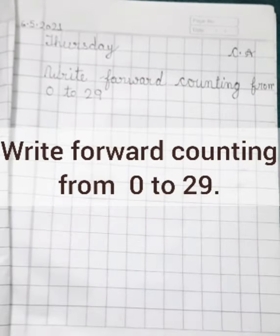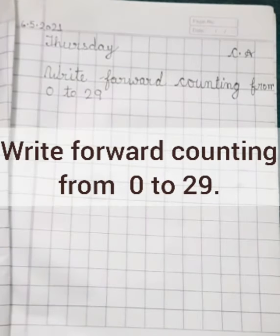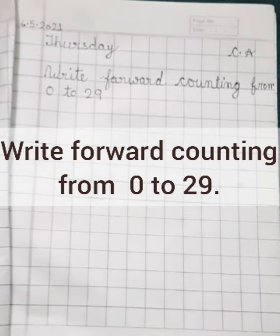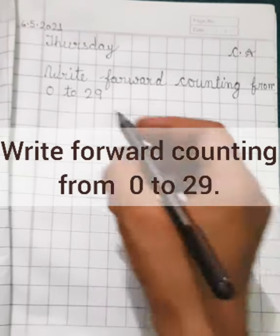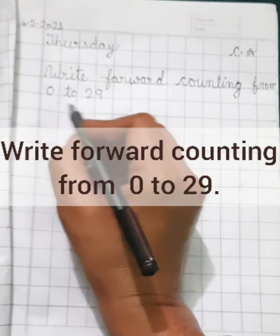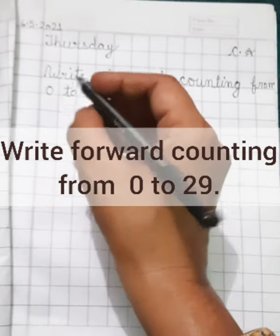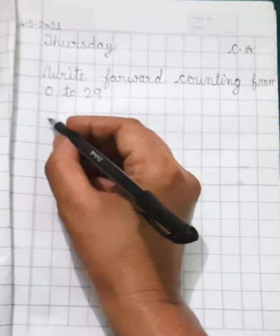We will write forward counting from zero to twenty nine. Do you know what are forward counting? Forward counting kya hai? When we go upward, then these are forward counting.